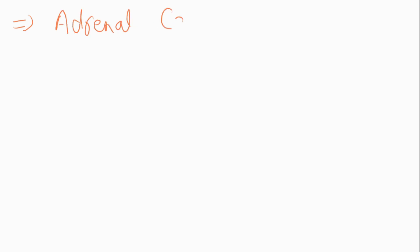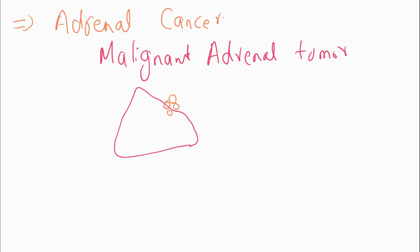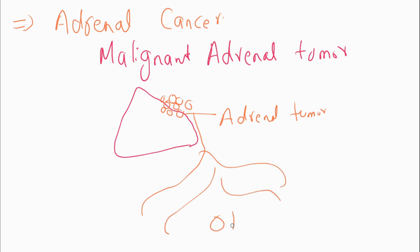The next disorder of the adrenal gland is adrenal cancer, also called malignant adrenal tumor. Tumors are formed in the adrenal gland due to imbalance in hormone production, and these adrenal tumors can spread to other organs of the body.